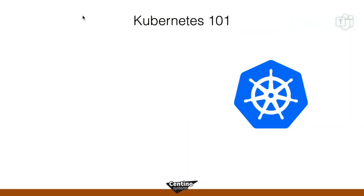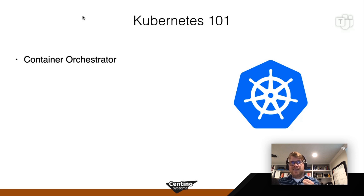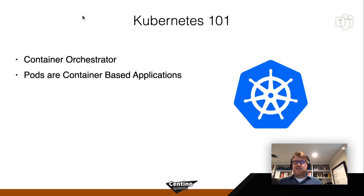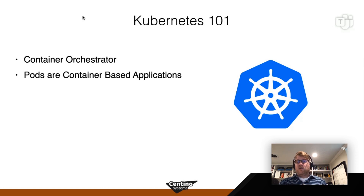In our last session, we talked about what a container is, and the last thing we're going to do in our data center is run around to a bunch of servers and type Docker run. What Kubernetes does for us is it's what's called a container orchestrator — the thing that's going to help us manage our containers in an enterprise way. When we deploy containers inside of Kubernetes, we wrap them in an abstraction called a pod. A pod is the running container, but also any resources that container needs to run — like storage or other configuration elements wrapped up in a deployable unit.